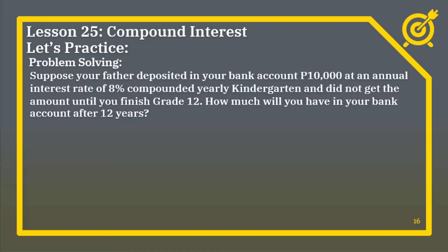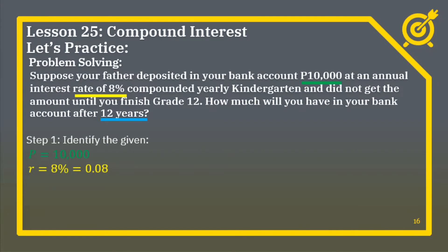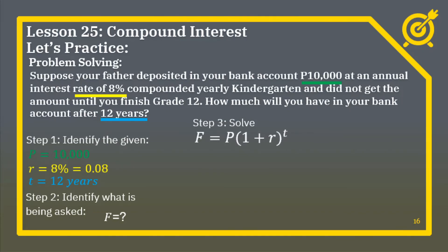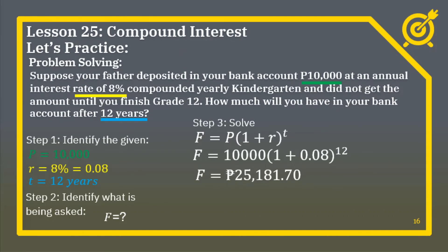For the worded problem: suppose your father deposited 10,000 pesos in your bank account at an annual interest rate of 8% compounded yearly in kindergarten and did not withdraw the amount until you finished Grade 12 — how much will you have after 12 years? We identify the given: P = 10,000 pesos; R = 8%; T = 12 years. We are asked for the future value. Using the formula F = P multiplied by 1 plus R raised to T and substituting the values, we obtain 25,181.70 pesos.